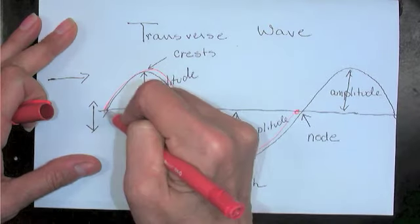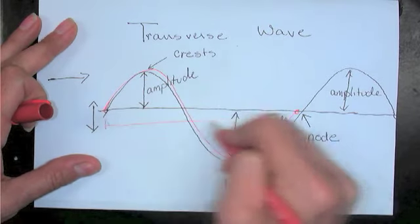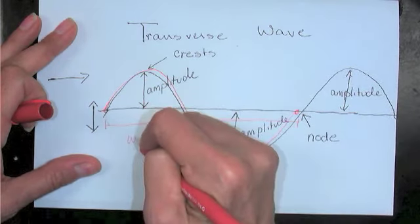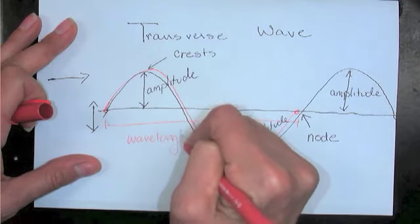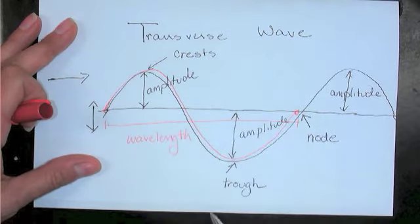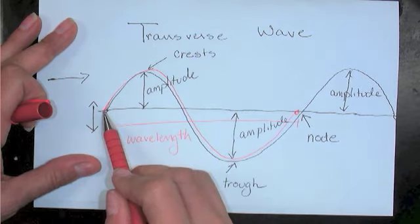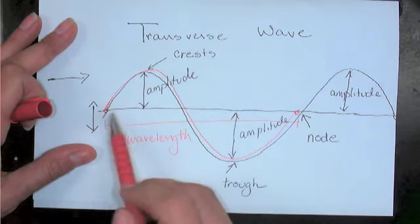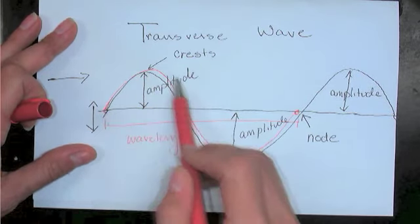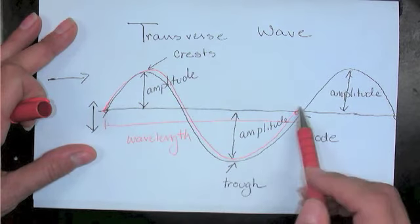So from there to there, that distance is the wavelength. Okay, and we can measure it from the node up to the crest, down to the trough, and back to the node.